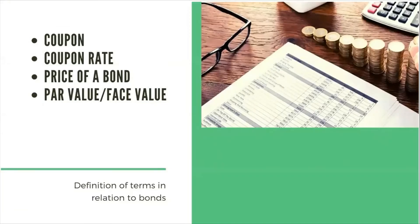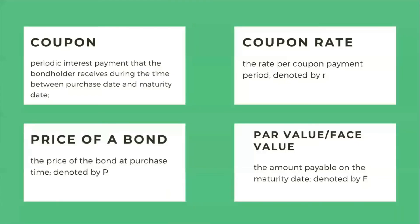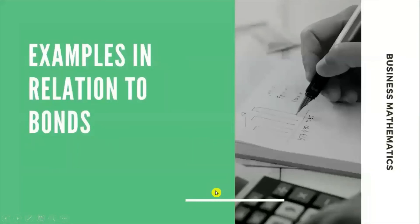Let's define the terms related to bonds. A coupon is the periodic interest payment that the bondholder receives during the time between the purchase date and the maturity date. The coupon rate is the rate per coupon payment period, denoted by R. The price of the bond at purchase time is denoted by P. The par value, or face value, is the amount payable on the maturity date, denoted by F.